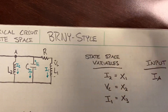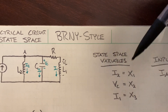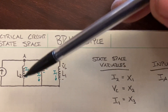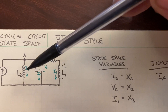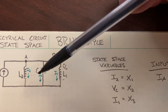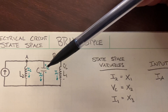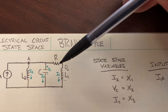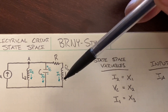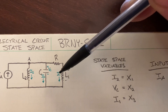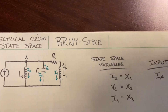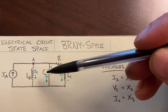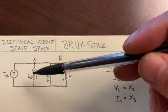Let's talk about which state space variables we're going to select. We've got three loops, so there will be three variables. When we're dealing with inductors, we want to choose the current across the inductor. When we're dealing with a capacitor, we want the voltage drop across the capacitor. For the resistor, we skip it. The other inductor, we take the current across it. Numbering from right to left, we have inductor number one L1, the capacitor, and inductor number two L2.